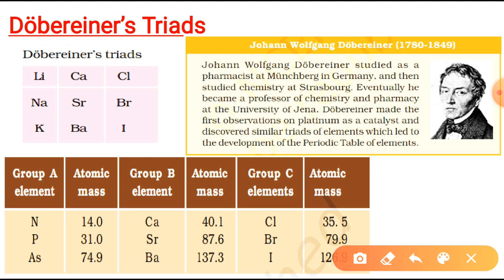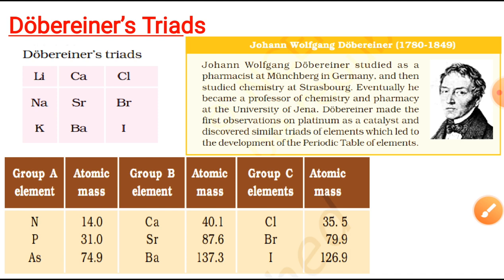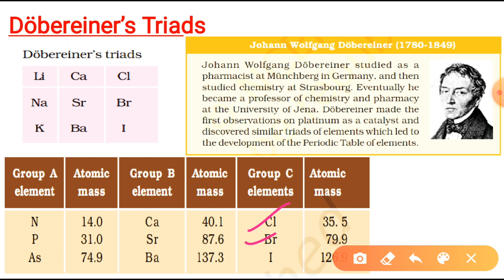The same applies to group 2 elements: calcium, strontium, and barium. The average of the atomic masses of the two end elements is nearly equal to that of the middle one. Then group 3 consists of chlorine, bromine, and iodine. They also have similar properties and the same relation in their atomic masses.